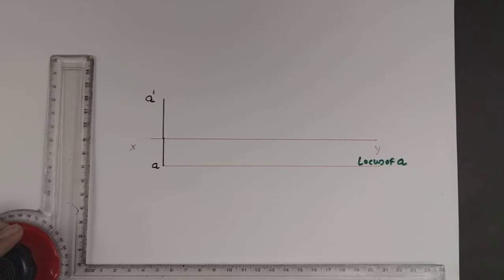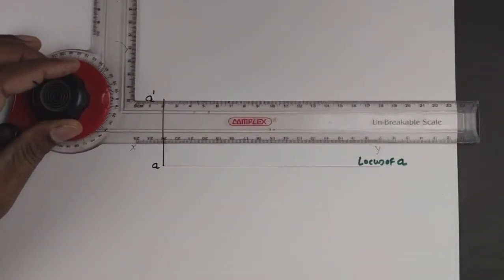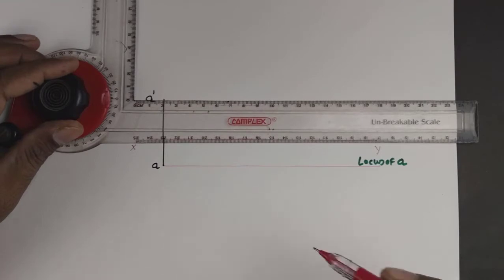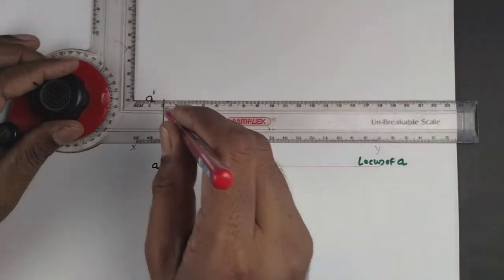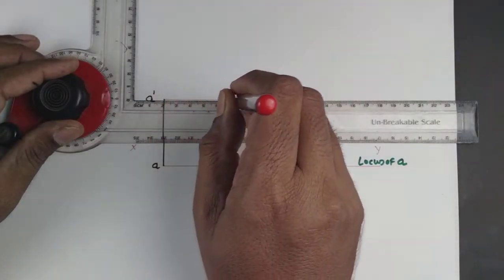Similarly, you can draw the line parallel to XY passing from A'. This is the locus of elevation point A'.